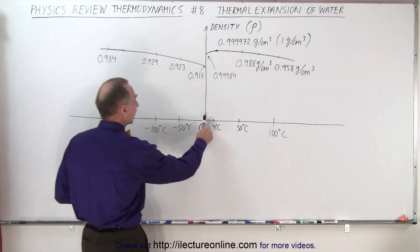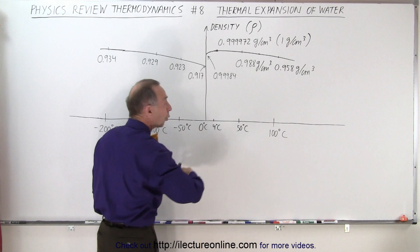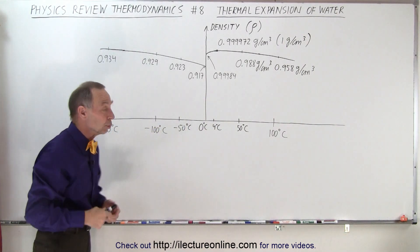So here's a dividing line, zero degrees Celsius, where ice becomes water when it's heated or when water becomes ice when it's cooled.